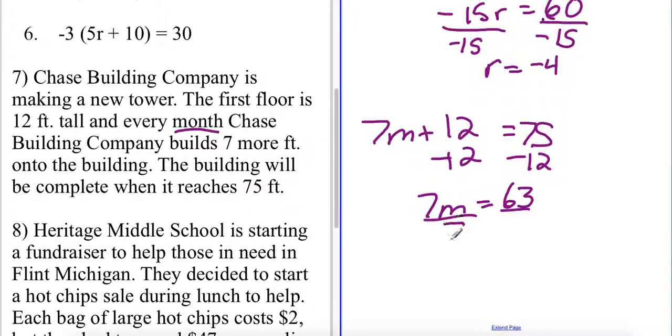I'll just divide both sides by my coefficient of 7. I'll get that m equals 9. So it'll take 9 months for the building to be complete.